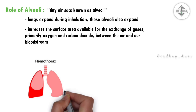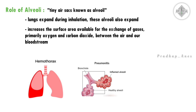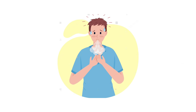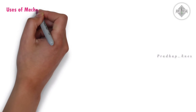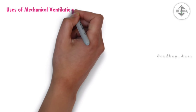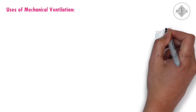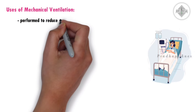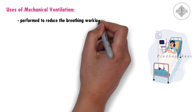If someone can't breathe properly on their own — for example, if the patient's lung is filled with blood (hemothorax), or they have inflammation in alveoli and lung disease — this routine breathing can't work efficiently, so they'll suffocate due to lack of ventilation. During these clinical scenarios, mechanical ventilation can be used to reduce the breathing workload of disease-affected patients.